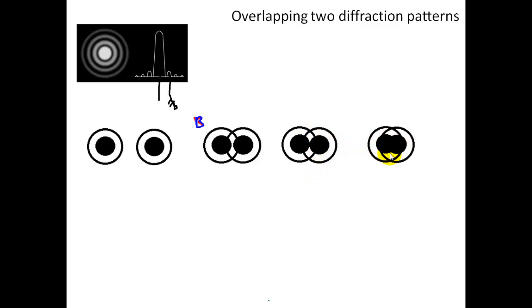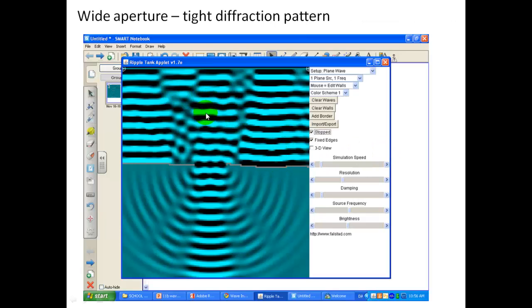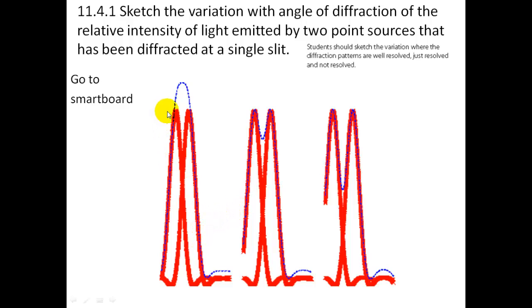So reminder that this is an image of a diffraction pattern here through ripple tank. The waves are coming down here. Here we have the central fringe there, first minima there, and then the second maxima outside the central fringe. So when this coincides with a minima here with the next image, then they should just be able to be resolved.